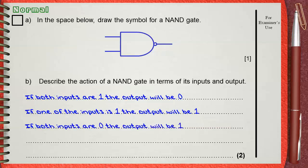If only one of the inputs is 1, the output will be 1. If both inputs are 0, the output will be 1. This is another way to talk about the NAND gate other than writing down the truth table.